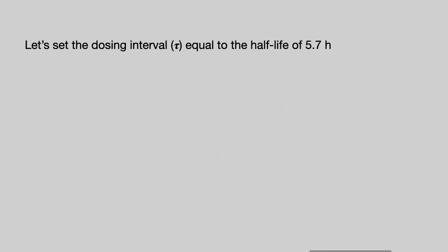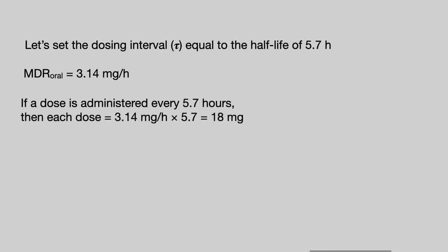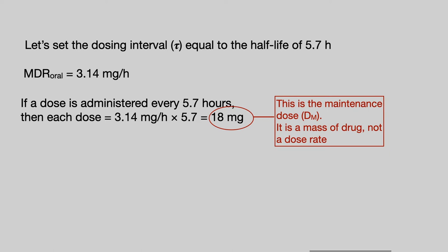We've calculated the MDR for the oral dose as 3.14 milligrams per hour. Now let's turn to the dosing interval, tau. A good place to start is to simply set it to the half-life. So if we administer the dose every 5.7 hours, then each dose will contain 18 milligrams — the maintenance dose, or DM. Note that the maintenance dose is a mass of drug, not a dose rate; the maintenance dose and the maintenance dose rate are two very different things.